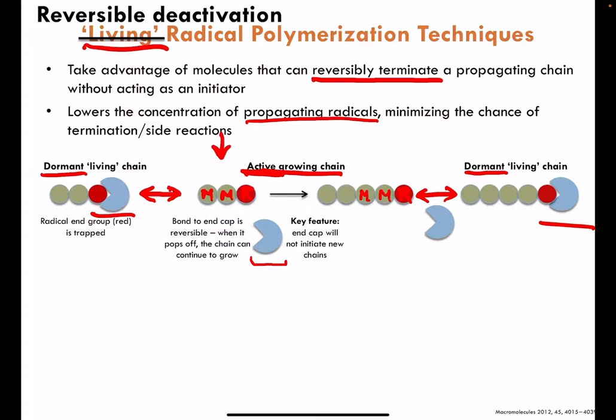These are the general thoughts on how to drop the overall radical concentration and still maintain the ability to have some chains active periodically to build molecular weight in a controlled fashion without termination reactions. We expect these species to be very low in concentration so that the likelihood of them finding other radicals is low, and monomer to be at high concentration to still allow for appropriate propagation, if you recall the kinetics lecture ahead of this one.